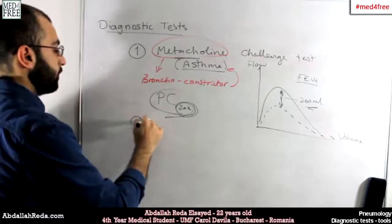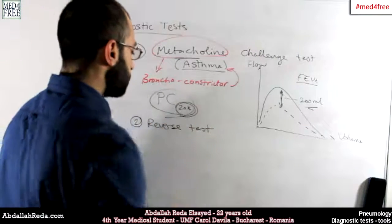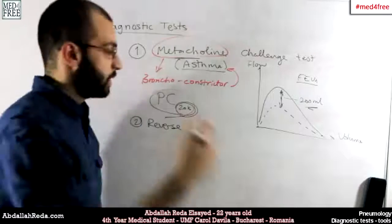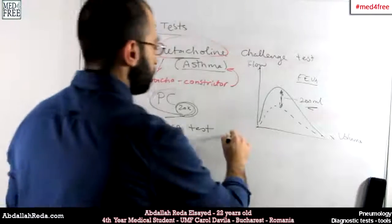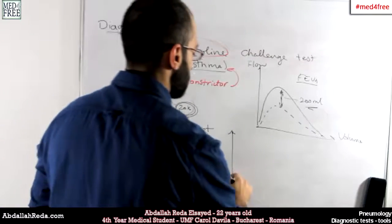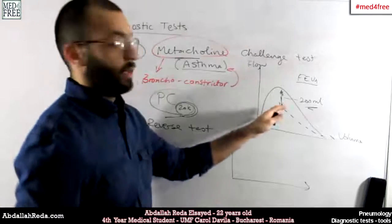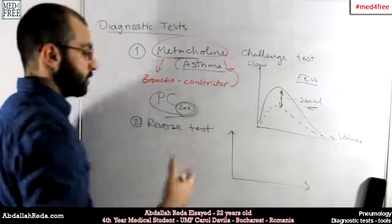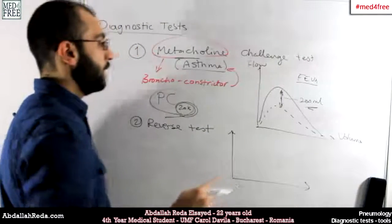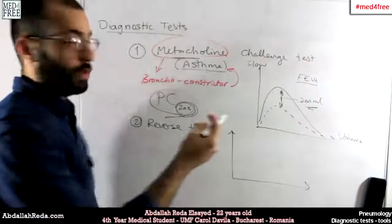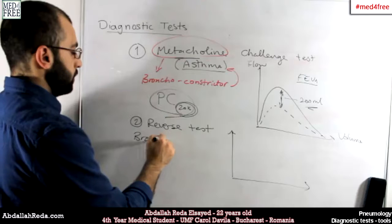The second test is called the reversal test. This is more common and it is also used in the diagnosis of obstructive diseases, but it is totally the opposite of the methacholine challenge test. The idea here is that we are aiming for an increase in FEV1, and instead of giving a bronchoconstrictor, we give a bronchodilator.